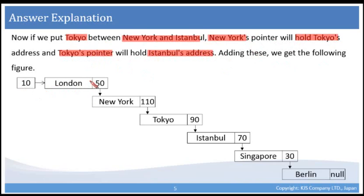At the start, 10 points to London again, and 50 points to New York. However, at New York, we now have 110 to point towards Tokyo. We then use the pointer 90 to point towards Istanbul's address, and then 70 to Singapore, as we had on the previous slide.